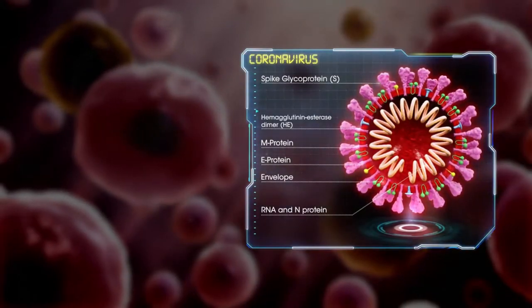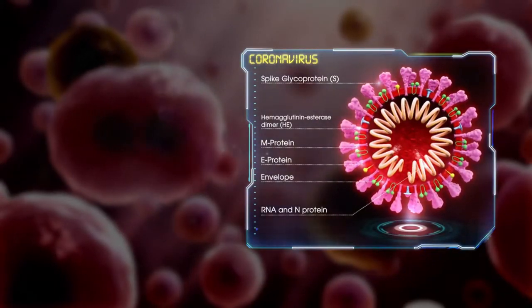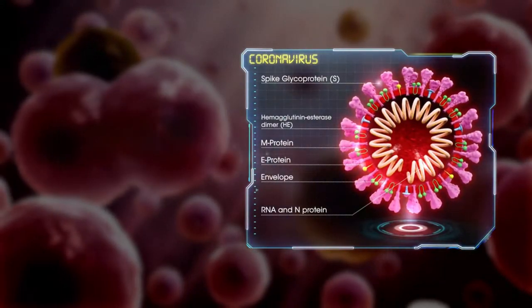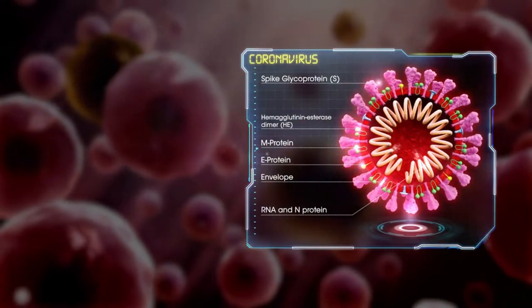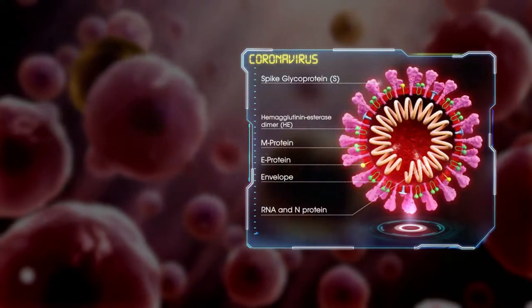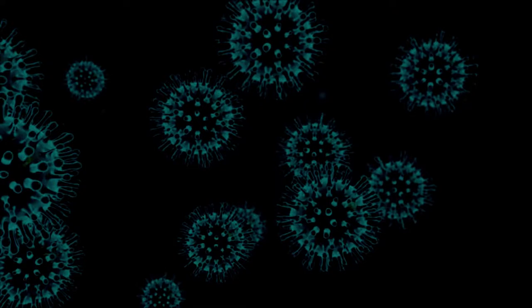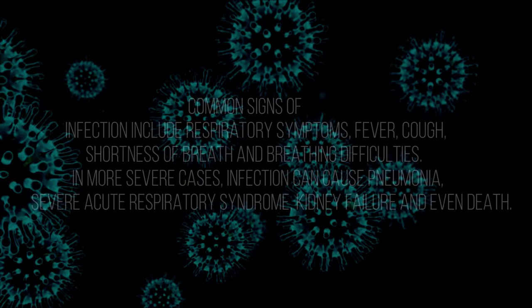The structure of coronavirus has multiple parts. Inside the virus lies the genetic encoding that allows the virus to hijack human cells and turn them into virus factories.